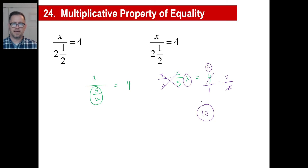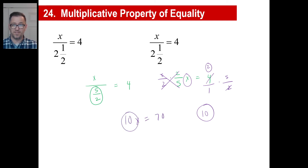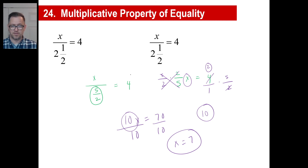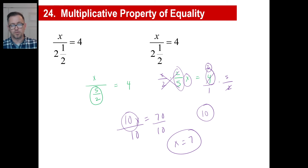If you have something like 10x equals 70, and there's an integer as the coefficient of x, just divide by the integer on both sides — 70 divided by 10 is 7. But if you have a fraction like 2 fifths x equals 4, multiply by the reciprocal. That's the simplest way to do it.